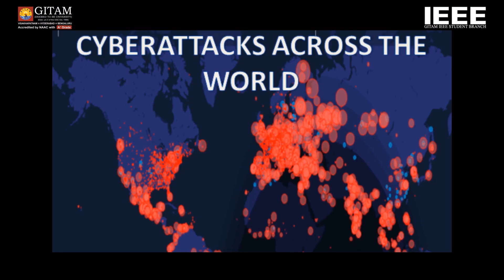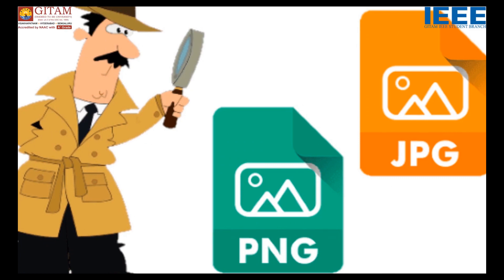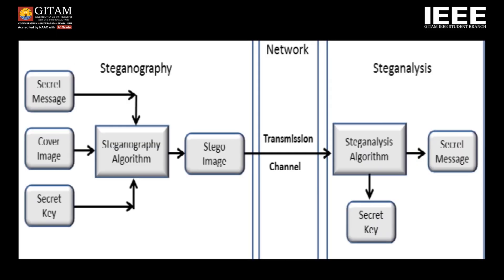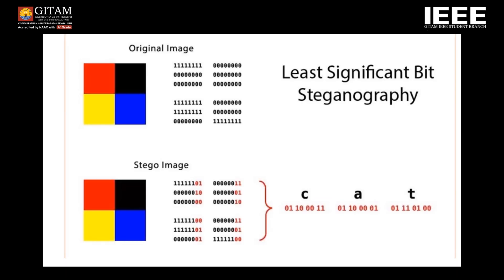It is a time-consuming process with obvious resource implications, even in countries that employ many people to spy on their fellow nationals. In computing, steganographically encoded package detection is called Steganalysis. Steganalysis that targets a particular algorithm has much better success as it is able to key in on the anomalies that are left behind, and this can be done by using the Least Significant Bits Steganography method.